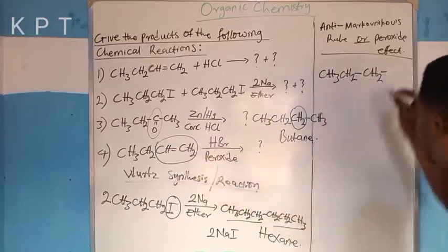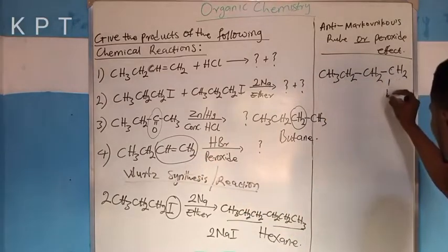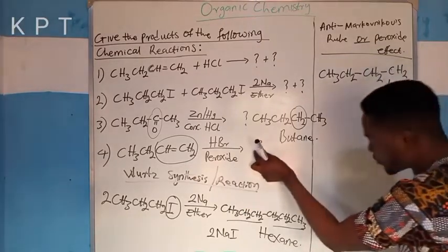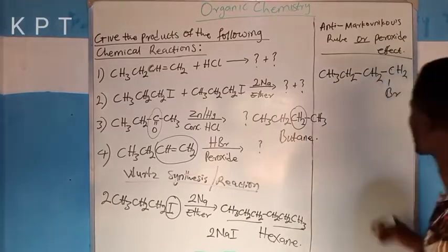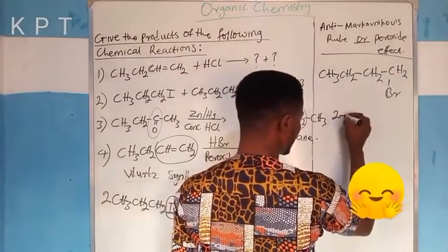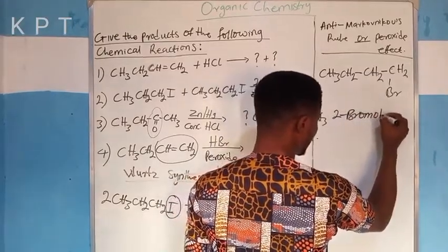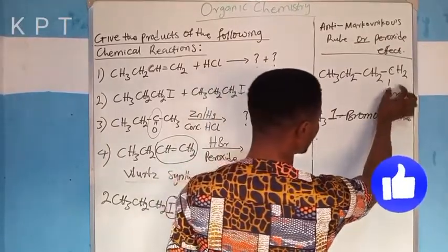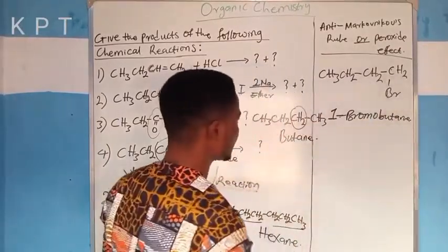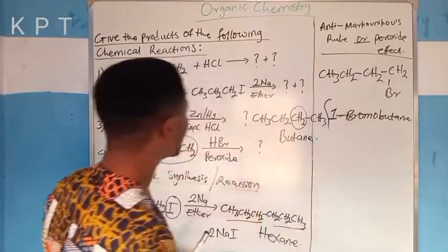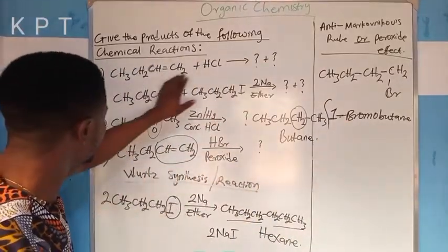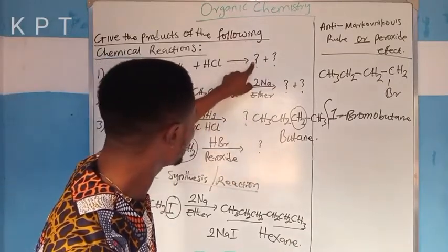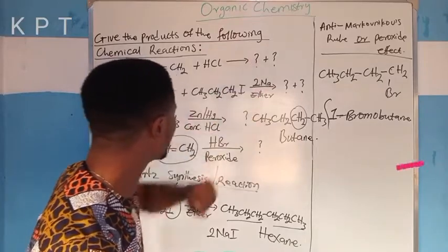Bromine will not enter the CH2 already written, therefore I am going to have CH2Br. This is the compound I am going to have, and the name of this compound is 1-bromobutane — 1-bromobutane because this bromine is on carbon number 1. So in conclusion, the compound I am going to have here is 1-bromobutane and 2-chlorobutane respectively.